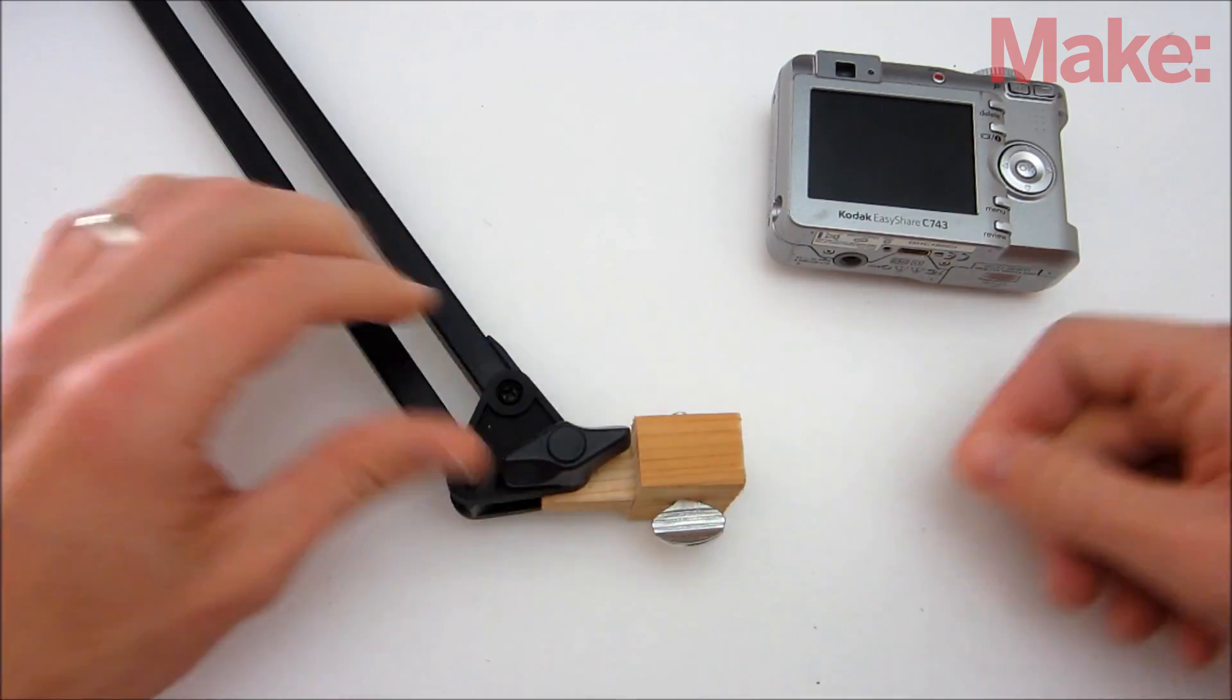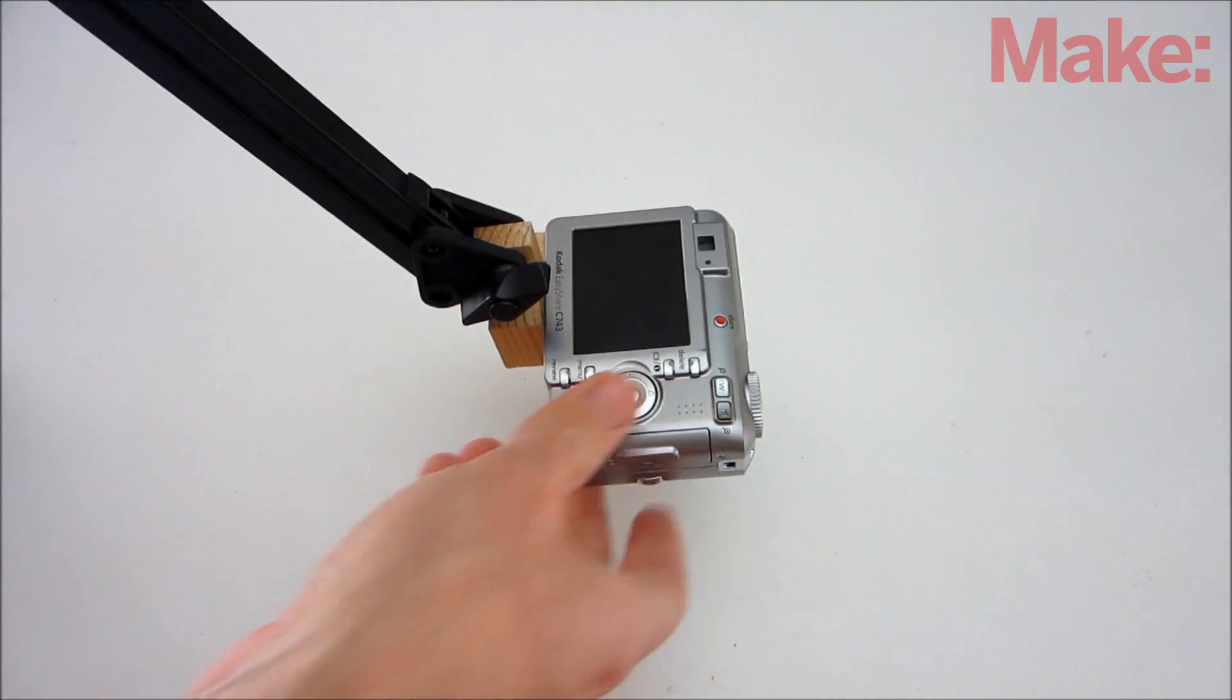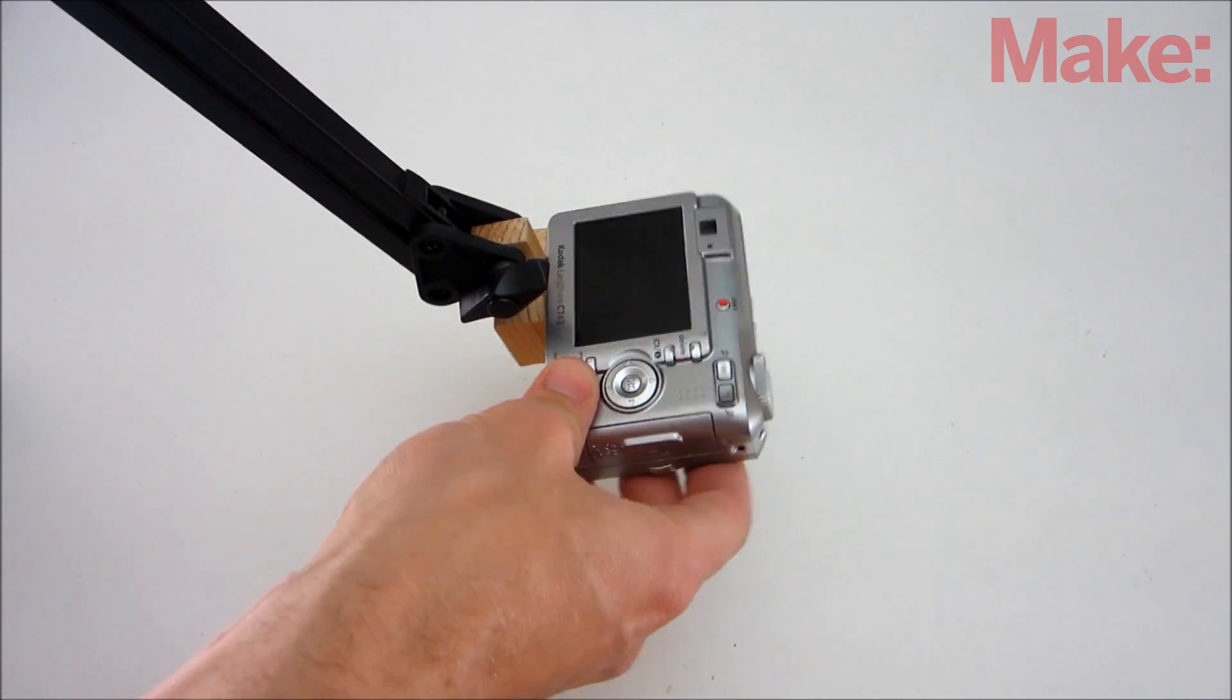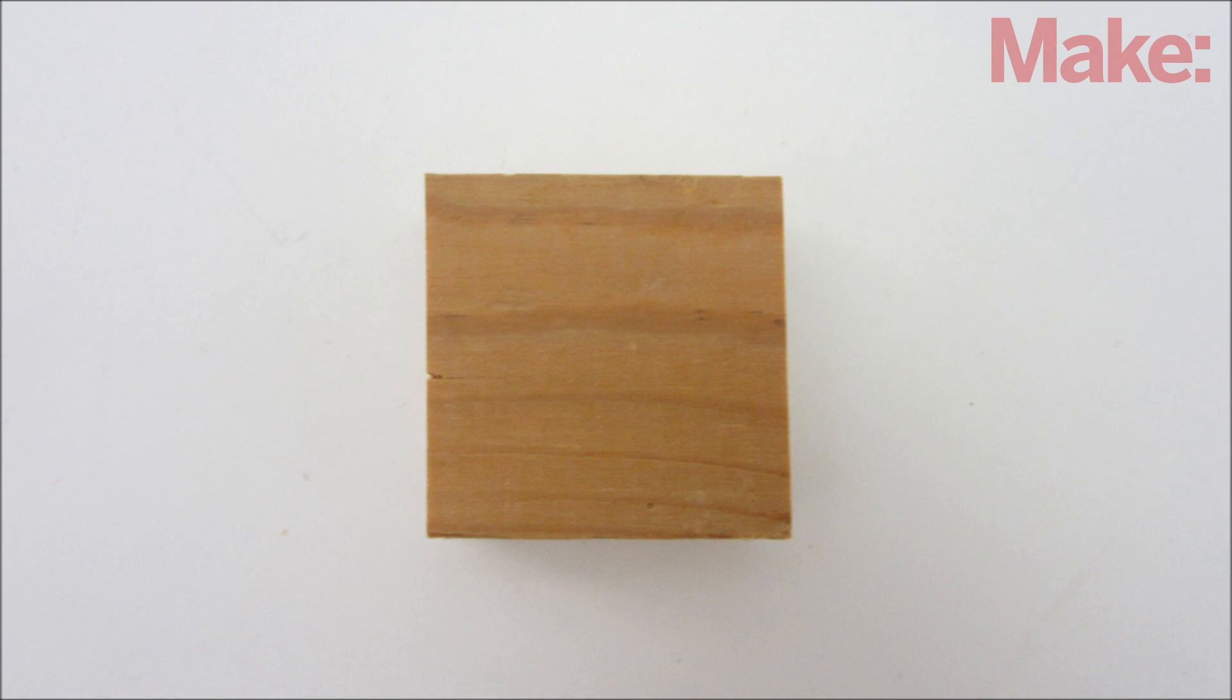Then insert a quarter inch bolt through the bottom of the bracket and screw on the camera. The result is a fairly functional articulated camera stand, but you can give your camera more degrees of freedom by adding additional brackets. To do this, start by cutting off another one and a half inch by one and a half inch section of wood.